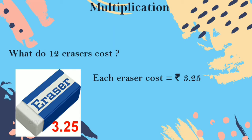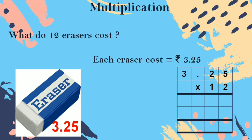After the decimal point, that is the paise. Before the decimal place, that is rupees — 3 rupees 25 paise. You are going to find out the cost of 12 erasers. Each eraser cost is given, so you are going to multiply. Start the multiplication.